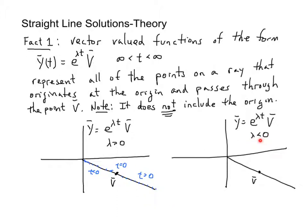In the case where lambda is less than 0, again, at time 0, we're right here. But if lambda is a negative number, as t increases and is positive, we'll be moving in this direction, when t is positive,